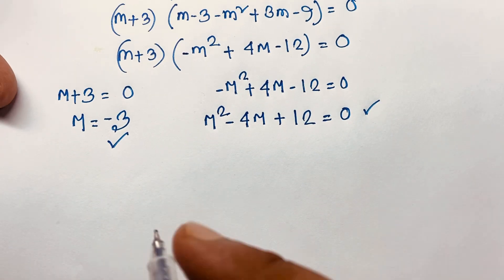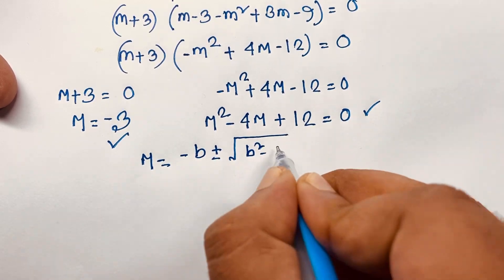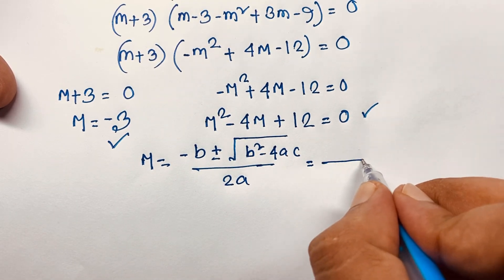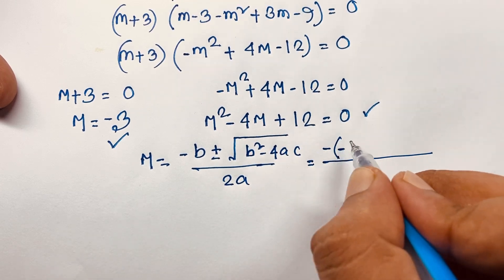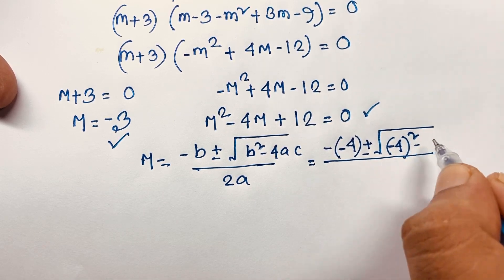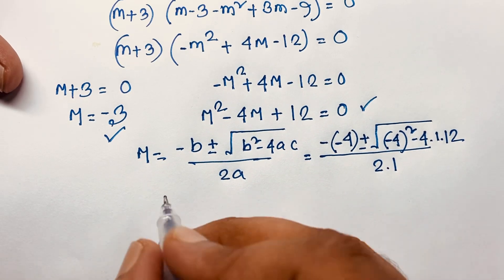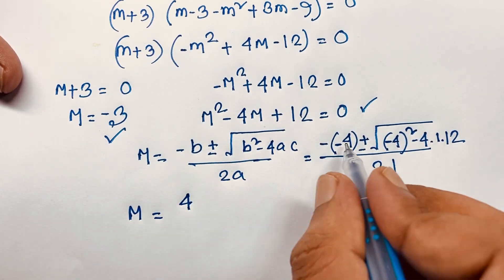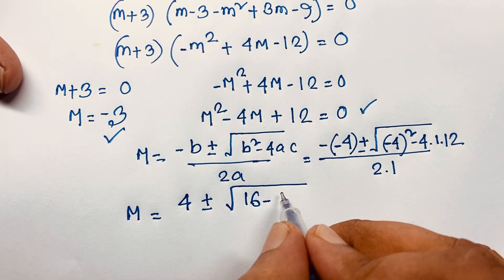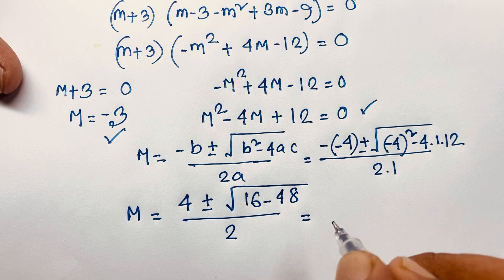This is a nice quadratic equation. So here m equals negative b plus or minus square root of b squared minus 4ac, over 2a. Applying this formula: negative negative 4, plus or minus square root of 4 squared minus 4 times 1 times 12, over 2 times 1. That gives m equals positive 4 plus or minus square root of 16 minus 48, over 2.